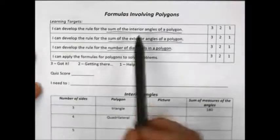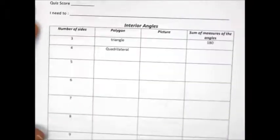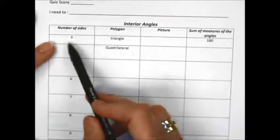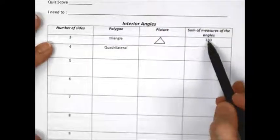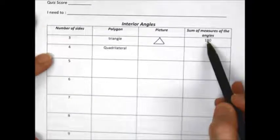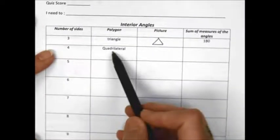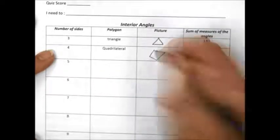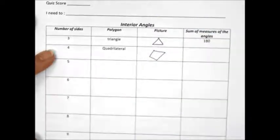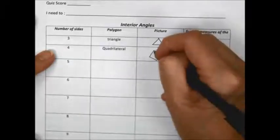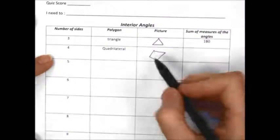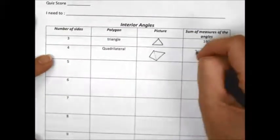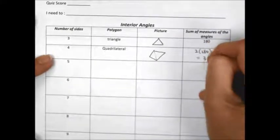The first one is the sum of the interior angles, which we'll work on in a chart. Some of this we know: if we have three sides, we have a triangle, and the sum of the angles is 180. If I have four sides, I have a quadrilateral. If I take that quadrilateral and connect two vertices, I create two triangles — so that's two times 180, which is 360.